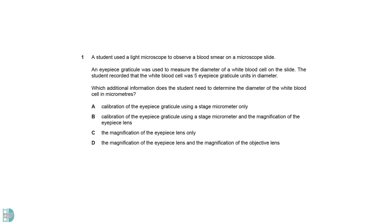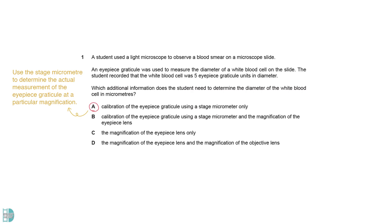To use the eyepiece graticule for measuring a cell, we must calibrate it using a stage micrometer. In other words, we use the stage micrometer to determine the actual measurement of the eyepiece graticule at a particular magnification. The magnifications of the eyepiece lens and objective lens are irrelevant in the calibration.